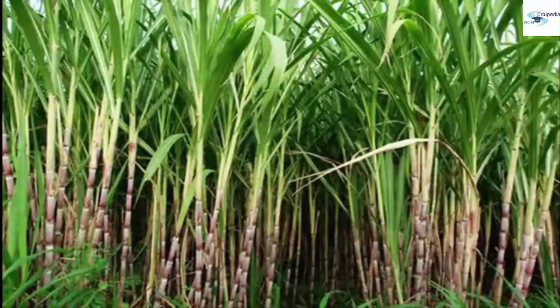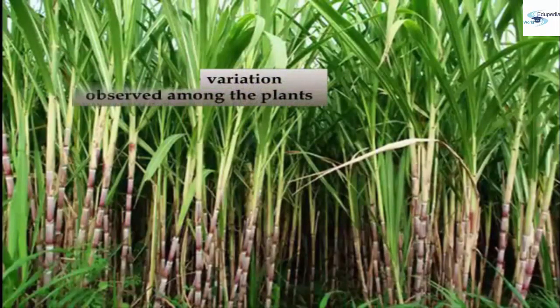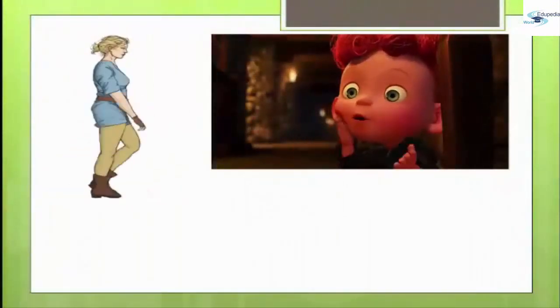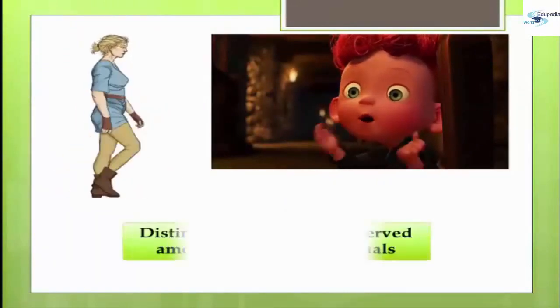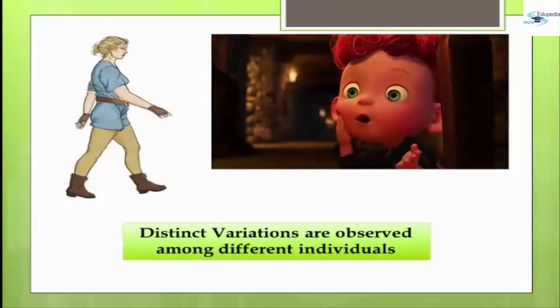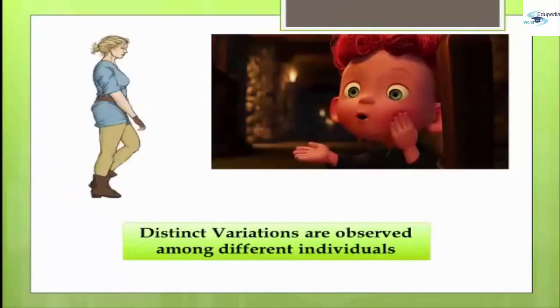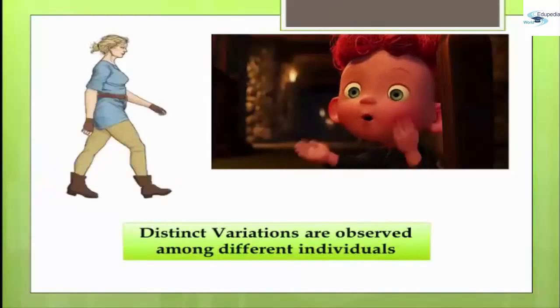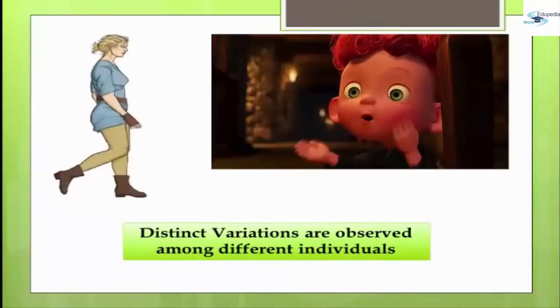Some amount of variation is also produced even during asexual reproduction. If we observe a field of sugarcane, we find very little variation among the individual plants. But in a number of animals including human beings — animals which reproduce sexually — quite distinct variations are visible among different individuals.